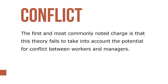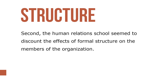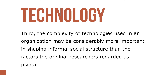More recent scholars in this field have devoted attention to shortcomings in the human relations school of organizational theory. The principal criticisms revolved around three points. First, this theory fails to take into account the potential for conflict between workers and managers. Second, the human relations school seemed to discount the effects of formal structure on members of the organization. Third, the complexity of technologies used in an organization may be considerably more important in shaping informal structure than the factors the original researchers regarded as pivotal.